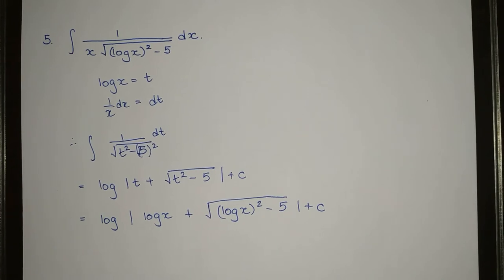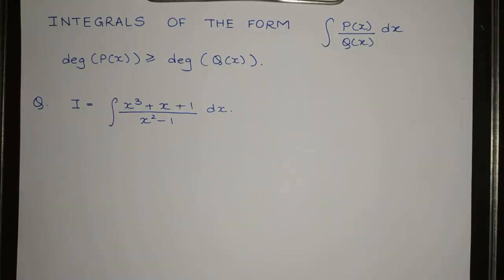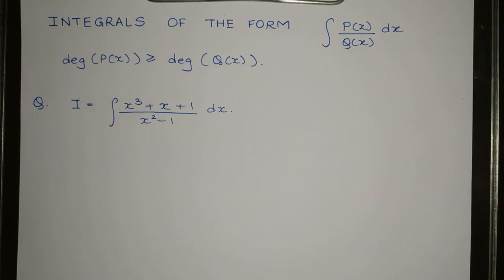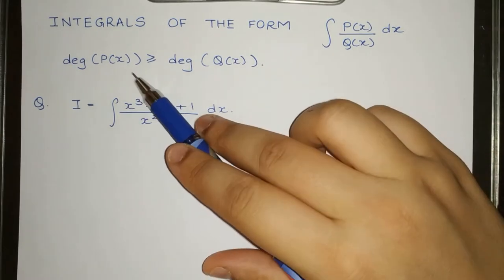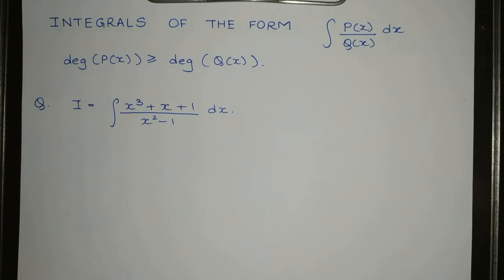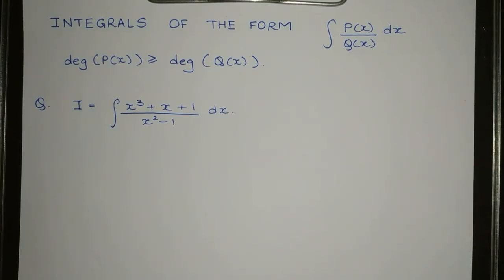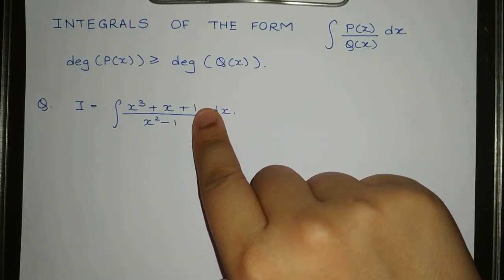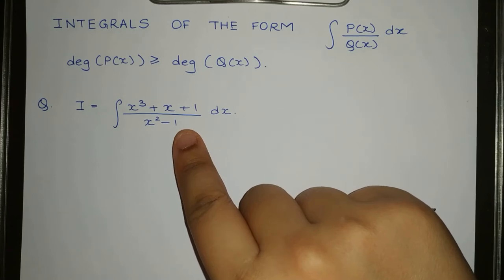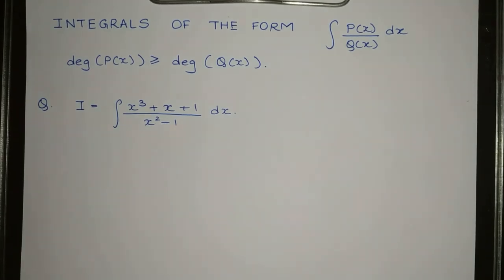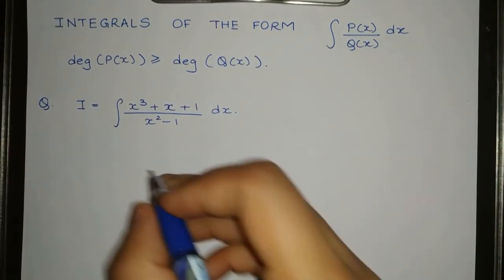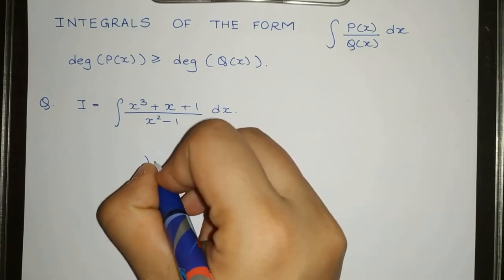Now let's do the next type of questions: integrals of the form polynomial divided by polynomial, where the degree of the numerator is greater than the degree of the denominator. In this case, the degree of the numerator is 3 and the degree of the denominator is 2. The first step is always to divide the numerator by the denominator using polynomial long division.